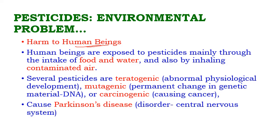Human beings are exposed to pesticides mainly through intake of food and water and by inhaling contaminated air. Several pesticides are teratogenic — causing abnormal physiological development — and mutagenic, causing permanent changes in genetic material like DNA and RNA. In some cases pesticides are also carcinogenic, that is cancer-causing. Moreover, pesticides also cause Parkinson's disease, a disorder in which the central nervous system is affected.